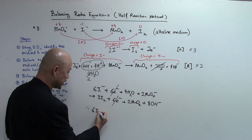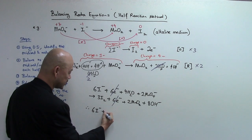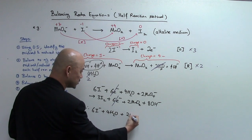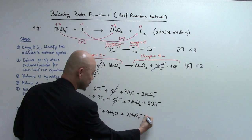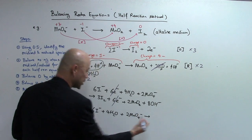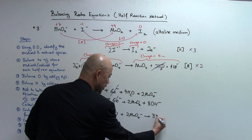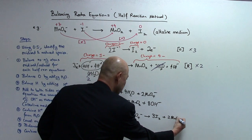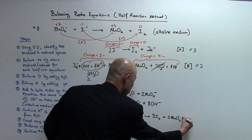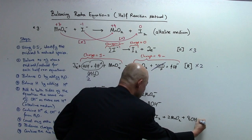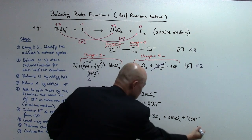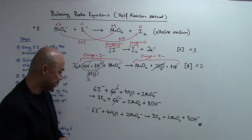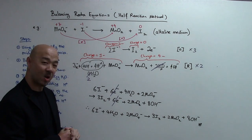The final balanced redox equation is: 6I- + 4H2O + 2MnO4- → 3I2 + 2MnO2 + 8OH-. This is the final answer.